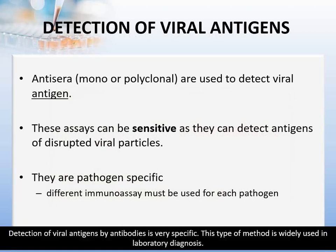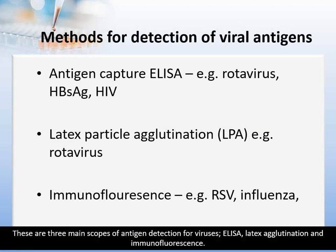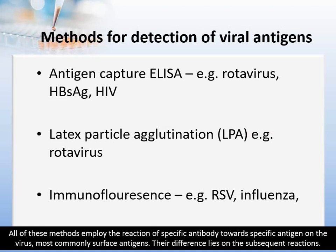The second mode of laboratory method is detection of viral antigen. Detection of viral antigen by antibodies is very specific, and this type of method is widely used in laboratory diagnosis. The three main approaches for antigen detection are ELISA, latex agglutination, and immunofluorescence. All of these methods employ the reaction of a specific antibody towards a specific antigen on the virus, most commonly the surface antigen.